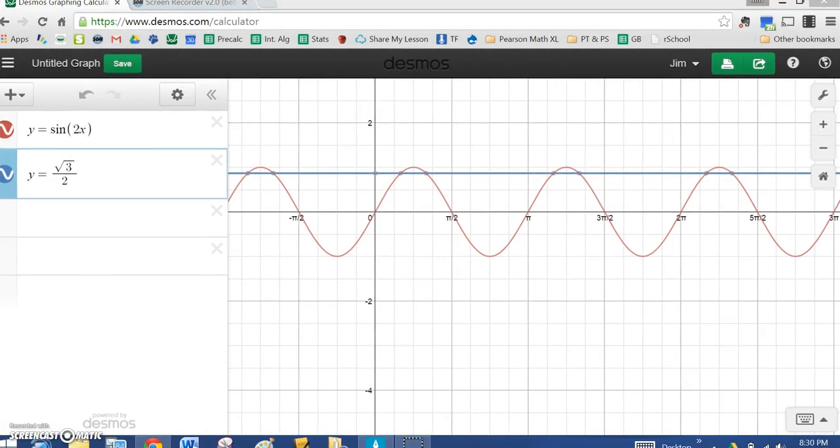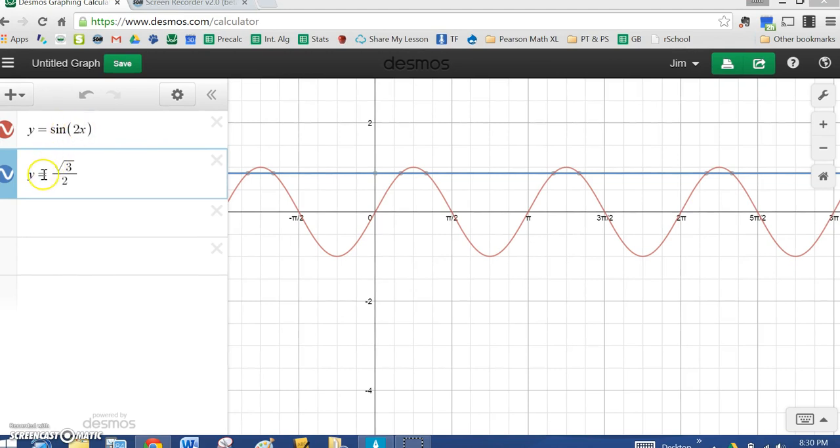So if we take y equals sine of 2x and y equals radical 3 over 2, and let's say I just want to find where the solutions are between 0 and 2π, I can see just by clicking one of the solutions is going to be π over 6, the other one's going to be π over 3, the third one is going to be 7π over 6, and the fourth is 4π over 3.